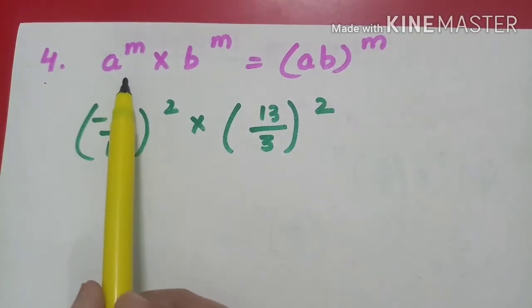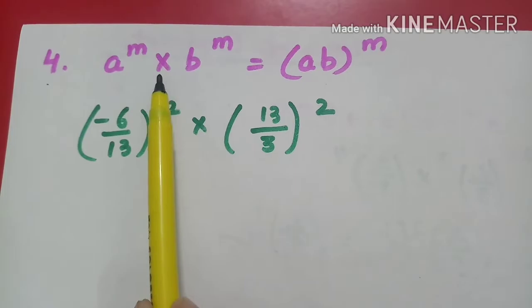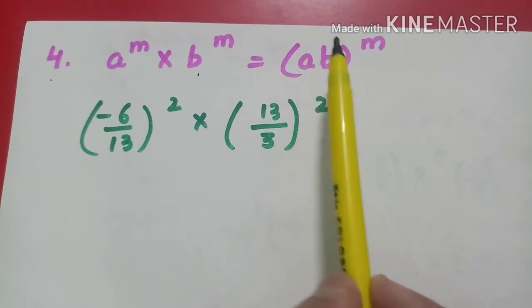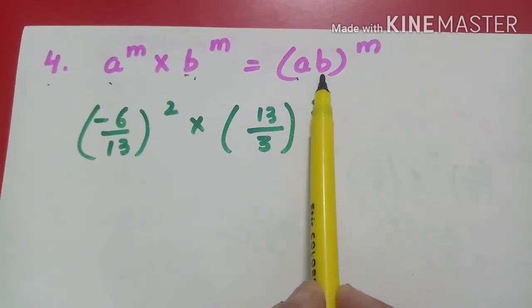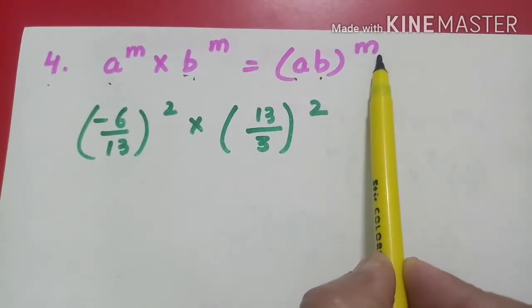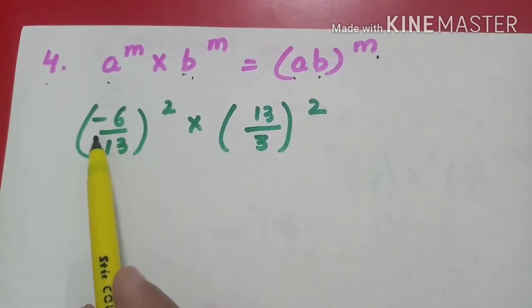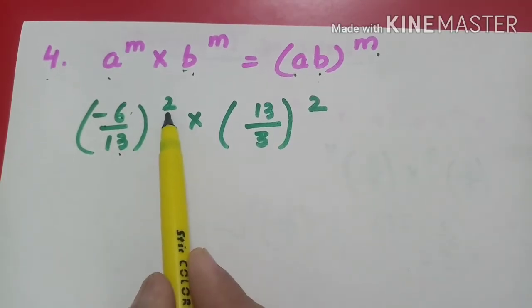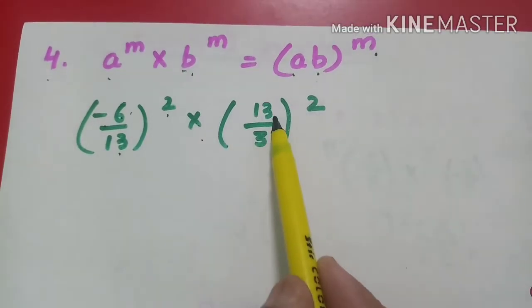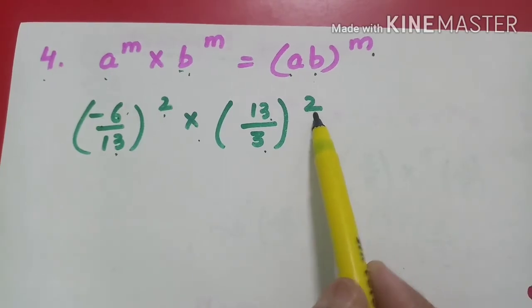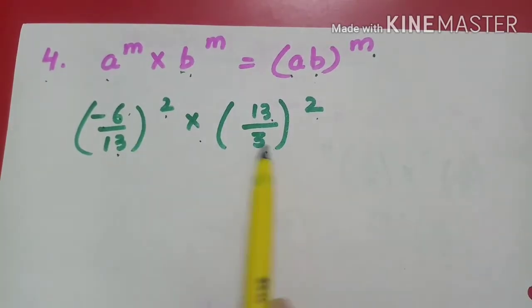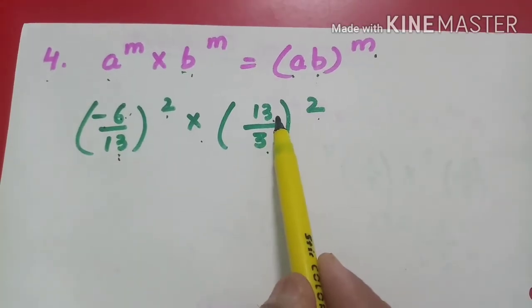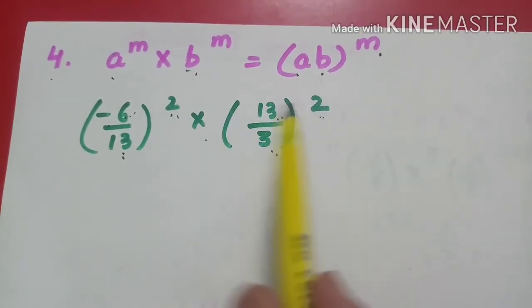The fourth law says when I multiply two numbers with different bases and the same power, the bases will get multiplied with the same power. Let's understand through one example. I have to multiply (-6/13)² with (13/3)². Here the bases are different: first base is -6/13 and second base is 13/3, but powers are the same.